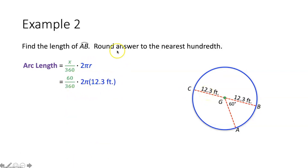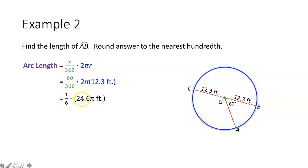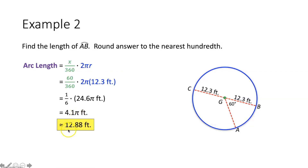Since the question says to round to the nearest hundredth, you could plug all of this into your calculator right now. Or you could simplify: 60 over 360 simplifies to one sixth, and 2 times 12.3 gives 24.6, so you get one sixth times 24.6π, which simplifies to 4.1π. This is the exact length, but since we want the answer rounded to the nearest hundredth, multiply 4.1 by π in your calculator and round to two decimal places. The arc length of arc AB is approximately 12.88 feet.